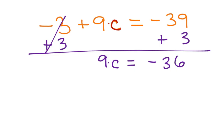Looking at this step, we have 9 times C equals negative 36. We want to undo our multiplication using division, so we'll divide both sides by 9 in order to isolate C. Just a side note — if this were, for example, a negative 9, we would also have to divide by negative 9. We're undoing the math by dividing instead of multiplying, so you have to divide by the exact same number.